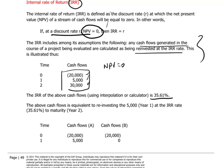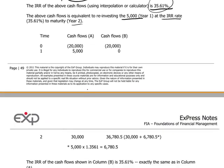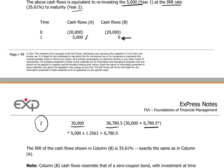Notice what happens if we manipulate the cash flows and instead of paying out 5,000, we actually reinvest the $5,000 from year one at the IRR rate of 35.61% until maturity in year two. Then our cash flows would look like this: instead of 5,000, we would have a year-one cash flow of zero, and in year two, instead of 30,000, we would have a cash flow of 36,780 — the difference being the 5,000 reinvested at 35.61% to give us 6,780.